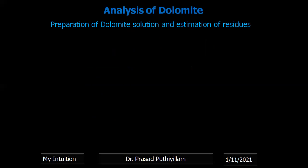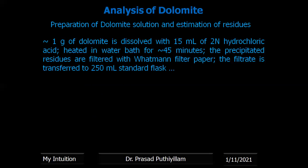Preparation of dolomite solution and estimation of its residues: approximately 1 gram of dolomite is dissolved with 15 ml of 2N hydrochloric acid. It is heated in a water bath for approximately 45 minutes to complete precipitation. If any residues are present, they will precipitate. The hot solution is transferred to Whatman filter paper; the residues and filter paper are separated. The filtrate is transferred to a 250 ml standard flask, made up to the mark, and shaken for uniform concentration.